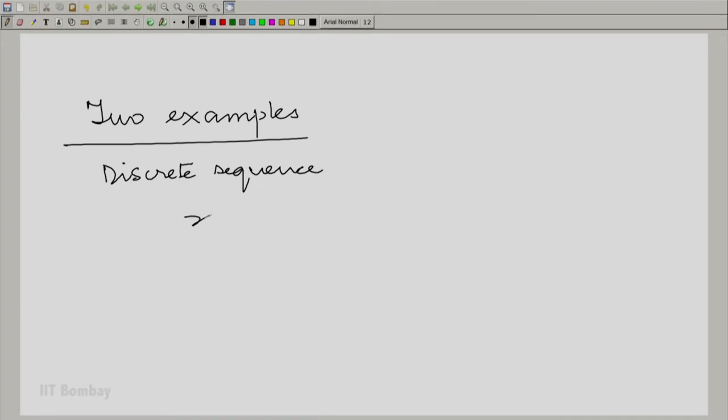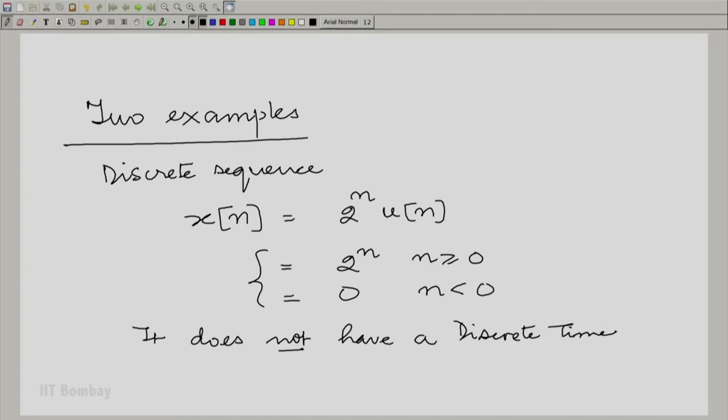Let us come down to the two examples, one discrete, one continuous. For variety, let us begin with the discrete example this time. We have the discrete sequence, let us call it x of n given by 2 raised to the power of n u n. Essentially x of n is equal to 2 raised to the power of n for n greater than or equal to 0 and 0 for n less than 0. Obviously, it does not have a Fourier transform, it does not have a discrete time Fourier transform. But then we can use that strategy.